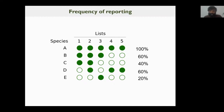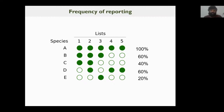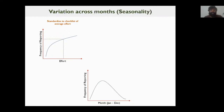eBird data is not systematically collected, so there are lots of biases that need to be statistically controlled for before any inferences can be drawn. One bias is variable effort across checklists — checklists can range from five minutes to many hours, and from a stationary point to covering many tens of kilometers. We statistically standardize to a checklist of average effort. Another bias is seasonal: there are many checklists made during winter but fewer during summer or the monsoon. We standardize to the average month as well.